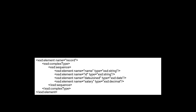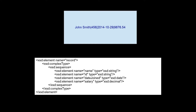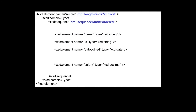Notice that our original XML schema entries can also describe the same logical data presented in a different data format. For example, here we have the same data in a pipe delimited format. As with the previous example, we have to add additional information that describes the physical format of the data so that a parser can translate the data into a logical structure. This time, the XML annotations are a little different.